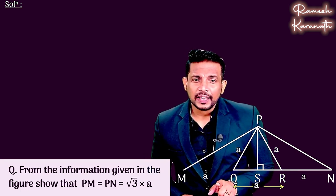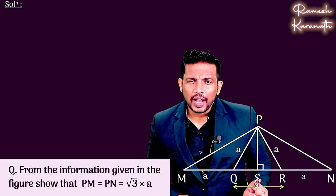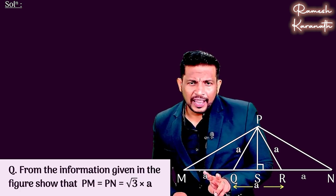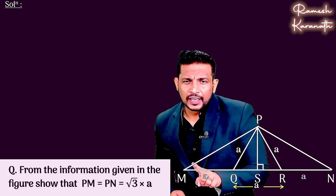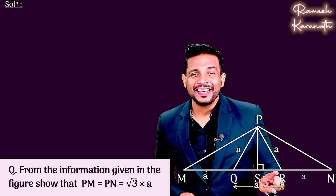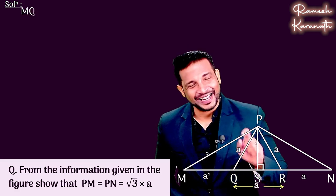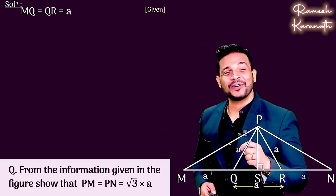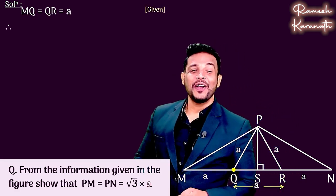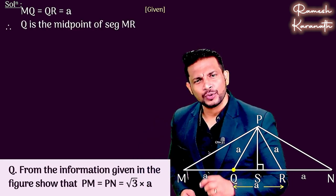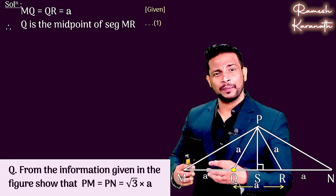MQ's length, what is it? a. QR's length, what is it? a. MQ and QR are equal. That means Q is the midpoint of MR. You are right. That means Q is the midpoint of side MR. So let's mark this as result number one, whatever we get from the information.